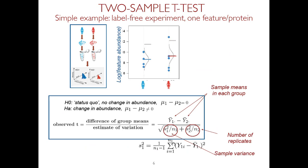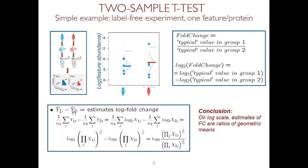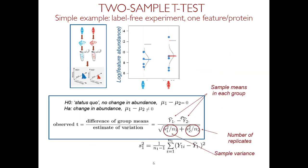Now let's talk about how we distinguish signal from noise — how we distinguish systematic change in protein abundance from random variation. We need a signal and we need a noise. We construct a quantity where the numerator is our signal: the difference of the means of protein abundances in each group. This is the estimate of the fold change between the groups on the log scale. In the denominator we characterize the amount of variation associated with the individual means.